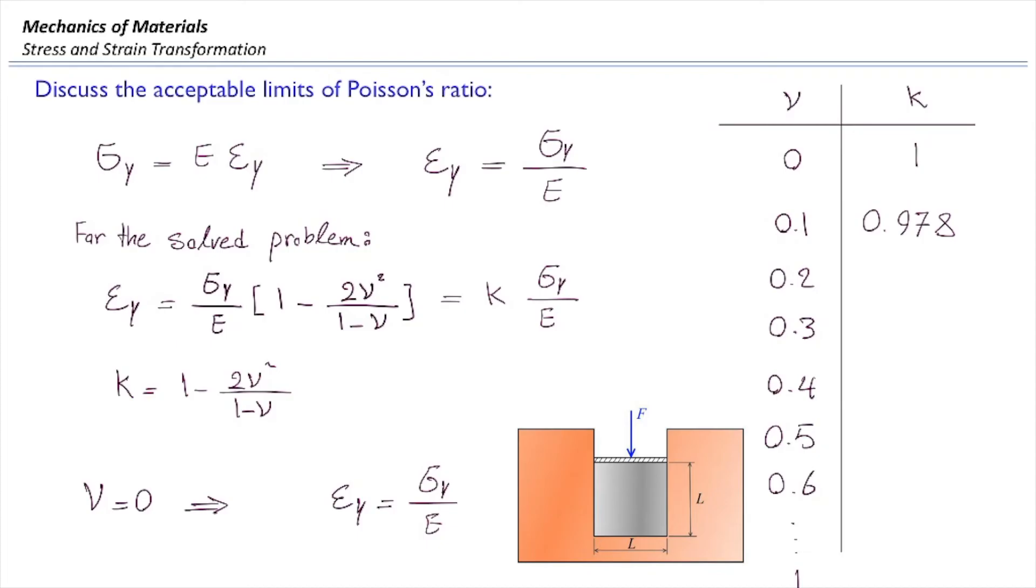So that k factor is going to be like 98%. So the deformation has reduced by 2%. Now tell me how much is the value for 0.2? 0.900.